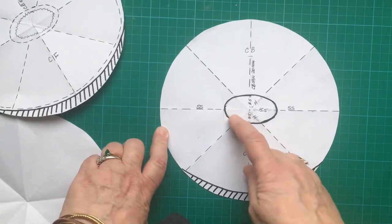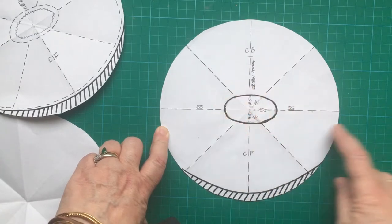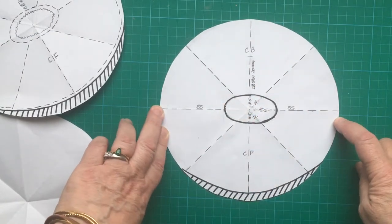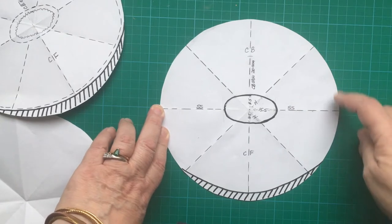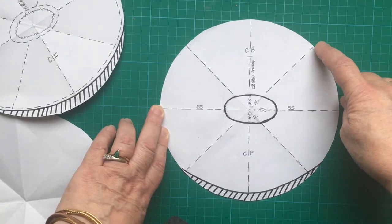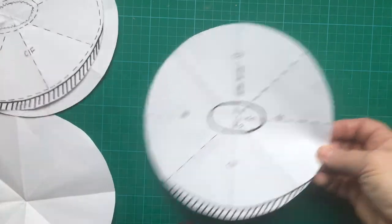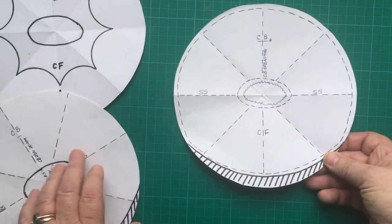So once you've done that, draw your line on the paper and you've got all these marked out. Then you will put it onto the fabric.